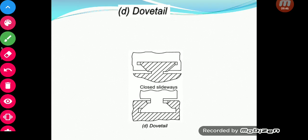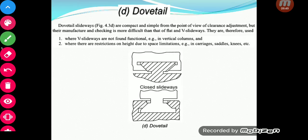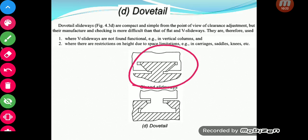This closed type is called the dovetail — that is another name for it. Dovetail slideways are compact and simple from the point of view of clearance adjustment, but their manufacturing and checking is more difficult than flat and V slideways. Therefore they are used when V slideways are not found functional, in vertical columns, and where there are restrictions on height due to space limitations. A milling machine typically will have this type of slideway.